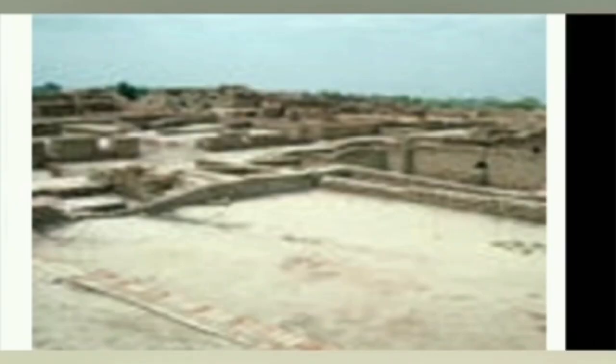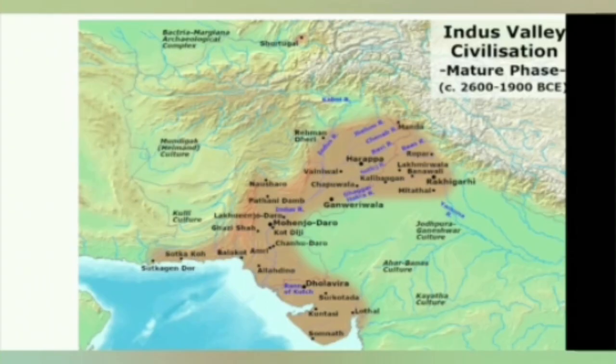These civilizations are called the bronze civilizations because the technology of making bronze items played an important role in the growth of cities. Apart from Harappa and Mohenjo-daro, other important sites of this civilization are Kalibangan in Rajasthan, Ropar in Punjab, Lothal in Gujarat, Banawali in Haryana, and Alamgirpur in Uttar Pradesh.